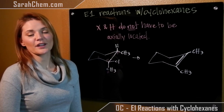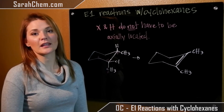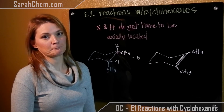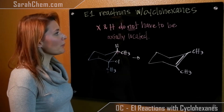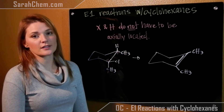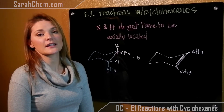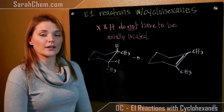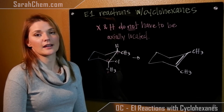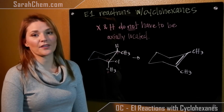Hi everyone, this is a video tutorial to help you understand how to predict the product for an E1 reaction happening with a cyclohexane. One big thing you have to realize is that there is a huge difference in the way an E1 reaction has to be versus an E2. In an E2 reaction your X and H group must be located axially. In an E1 reaction that is not the case.